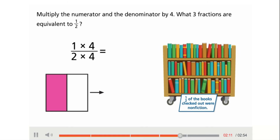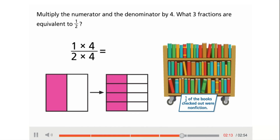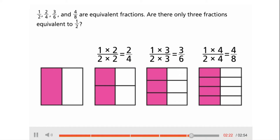Multiply the numerator and the denominator by four — this gives four-eighths. One-half, two-fourths, three-sixths, and four-eighths are equivalent fractions. Are there only three fractions equivalent to one-half?